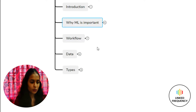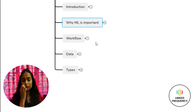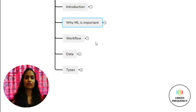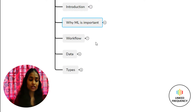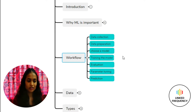Now let's move ahead to the workflow. The workflow is the step-by-step process of how machine learning happens, and it involves seven different steps. Usually people only talk about training set, testing set, and model, but that is not the right way to get an accurate model. Instead, we follow seven steps that lead to a very efficient model: data collection, data preparation, choosing the right model, training the model, evaluation, parameter tuning, and lastly prediction.